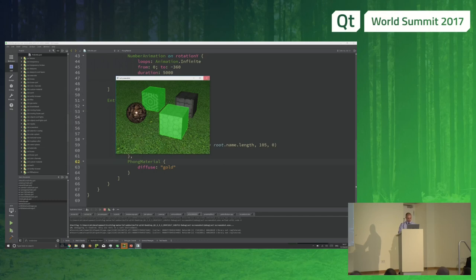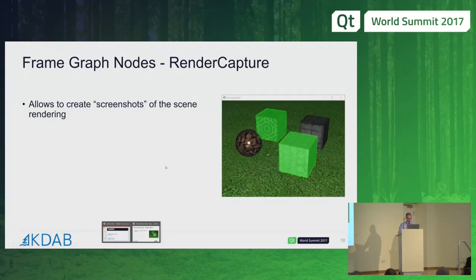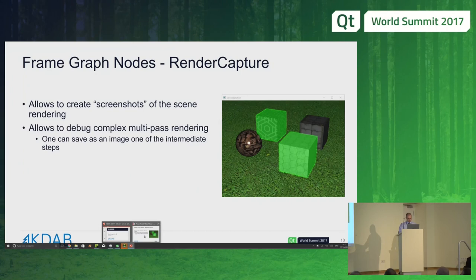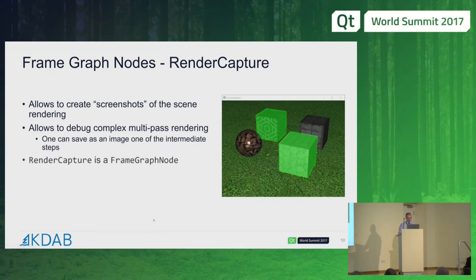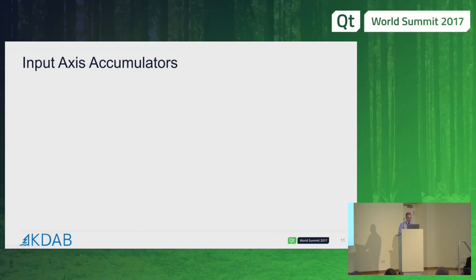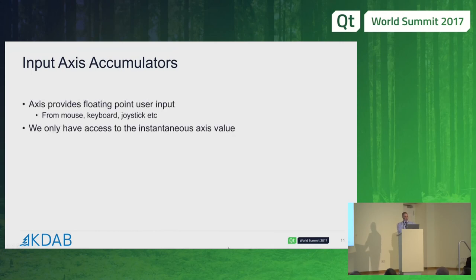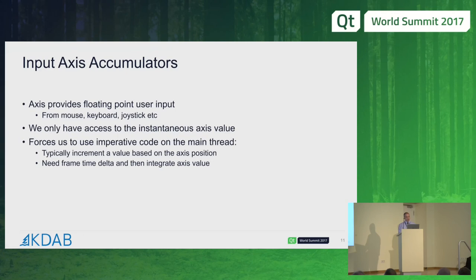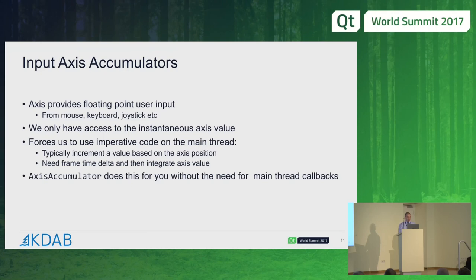The render capture is called QRenderCapture. There's also another helper called Axis Accumulators, which integrate the input devices as a function of time on the backend, saving you from having a per-frame callback to the front end on the main thread. You can treat the axis input values as either velocities or accelerations.